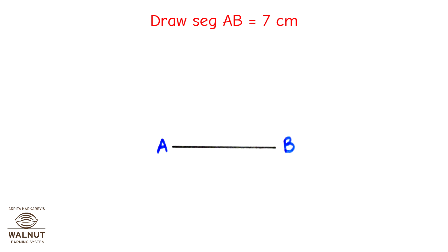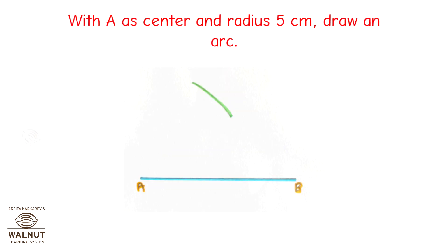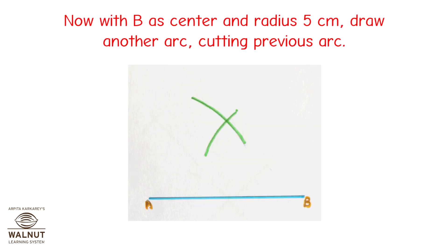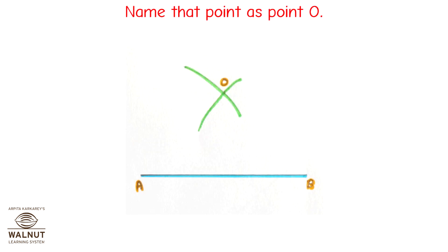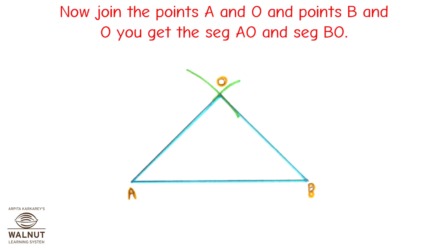Draw segment AB equal to 7 cm. With A as center and radius 5 cm, draw an arc. With B as center and radius 5 cm, draw another arc cutting the previous arc. Name that point as point O. Now join the points A and O and points B and O to get segments AO and BO.